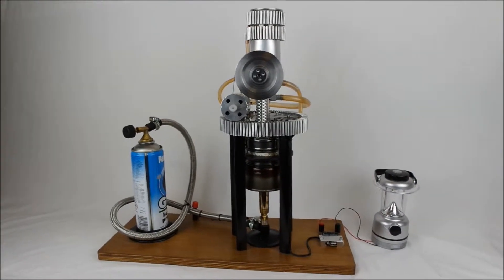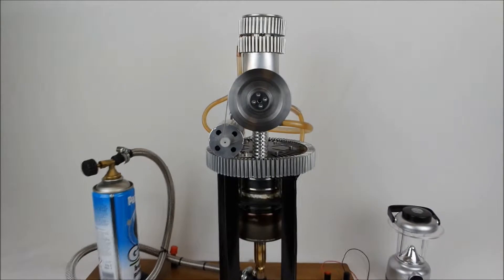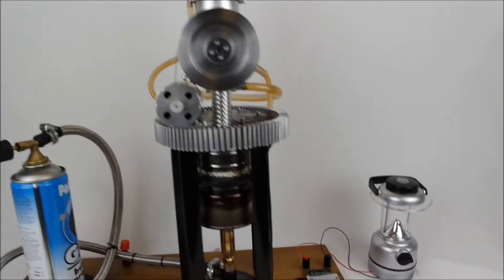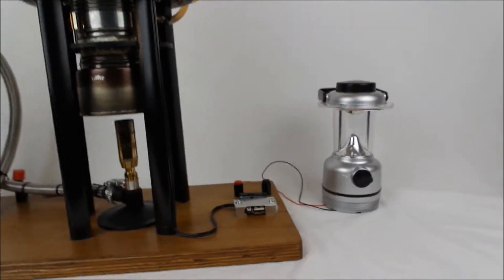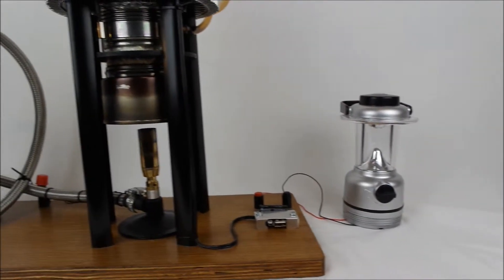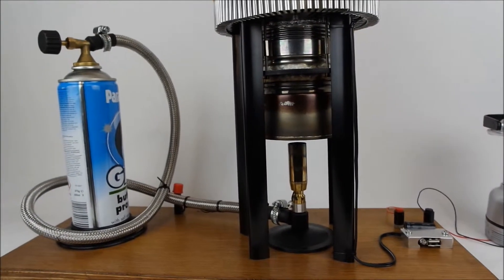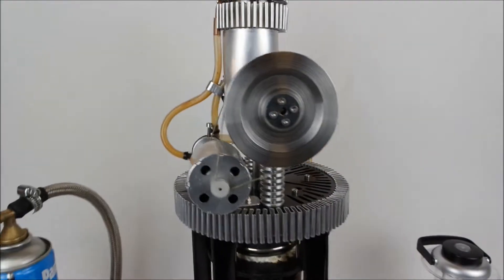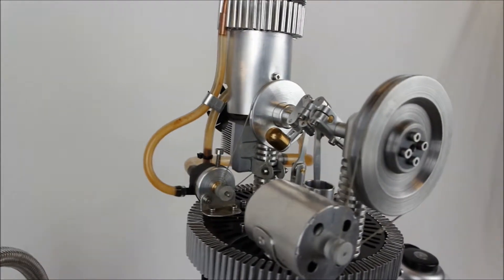In this video we'll demonstrate a Stirling engine which is configured as an emergency power generator connected to a simple LED lantern. The Stirling engine is powered by propane and it's optimized to run continuously using an onboard water pump and a small DC generator.